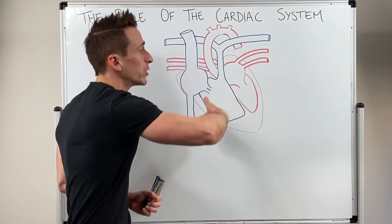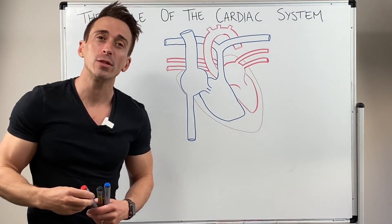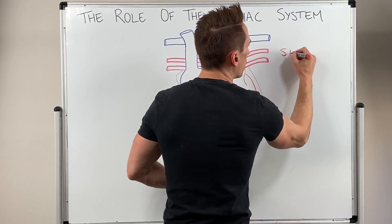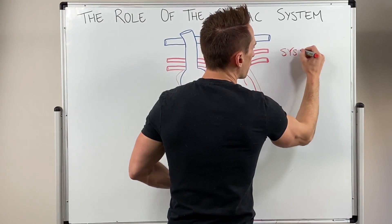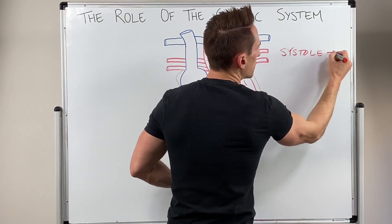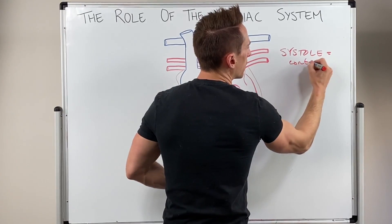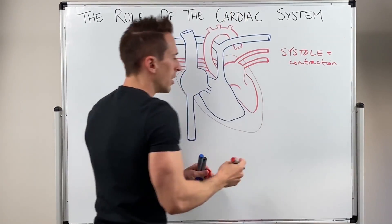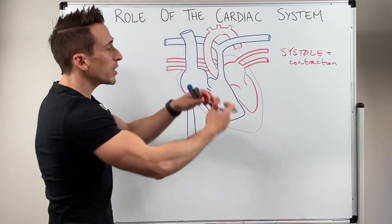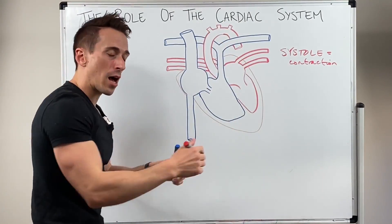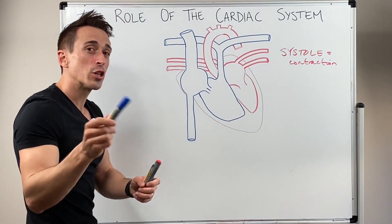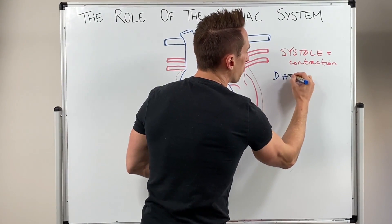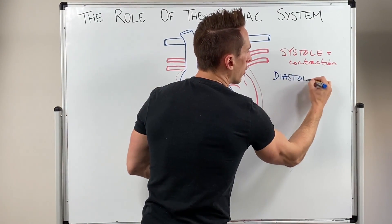When the heart contracts to eject this blood, the term we use is systole. Let's write that up — systole is the contraction of the heart to eject that blood. Then after a contraction, the heart needs to relax and fill up with blood, and this is what we call diastole. Diastole is the relaxation or filling of the heart.